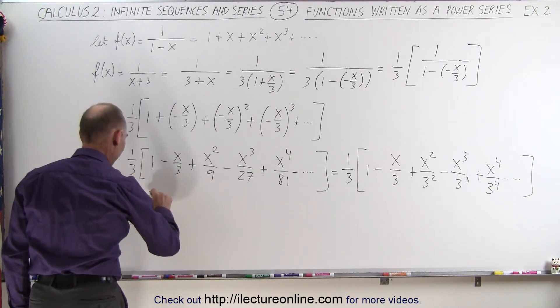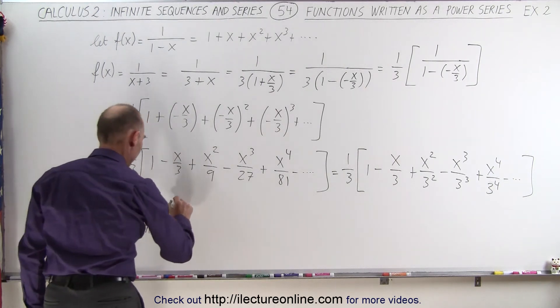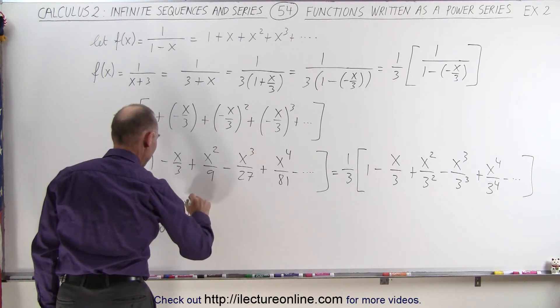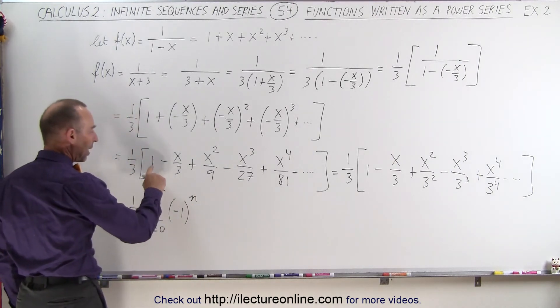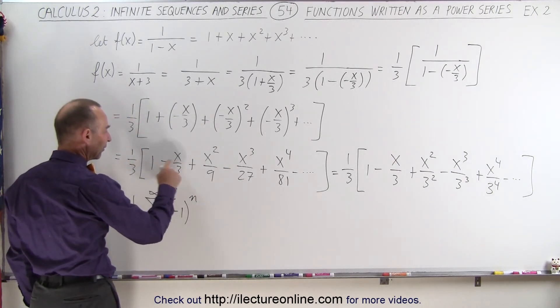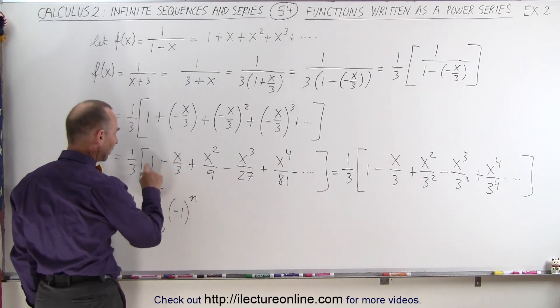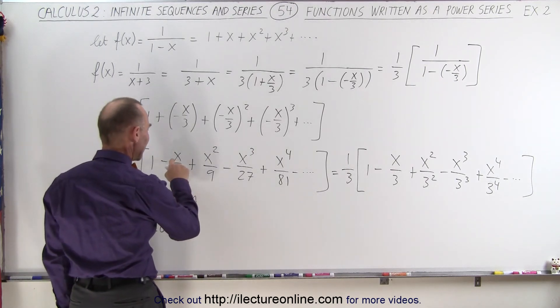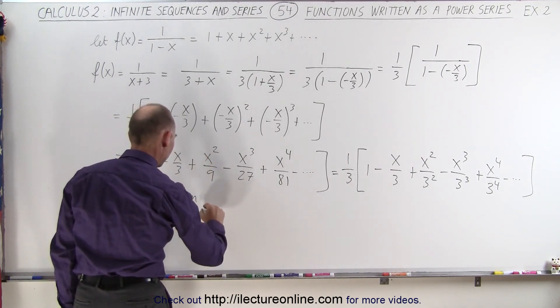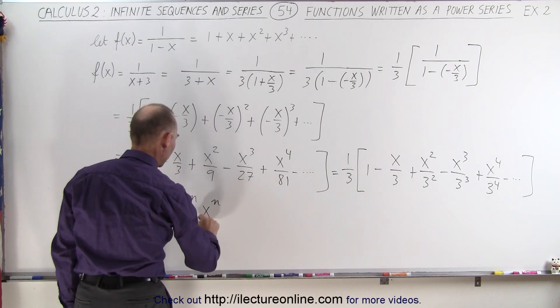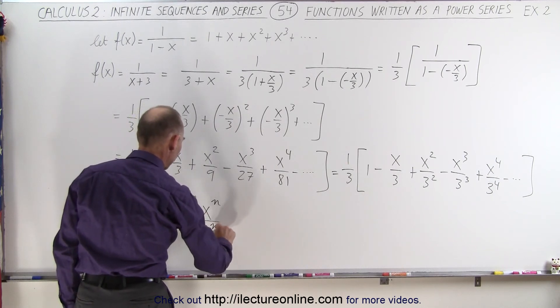from n equals 0 to infinity of, we have minus 1 to the n power, because that will allow us to come up with a positive and negative sign. When n is 0, we get a positive. When n is 1, we get a negative, and so forth. Then we need an x to the n power, x to the n power, divided by 3 to the n power.